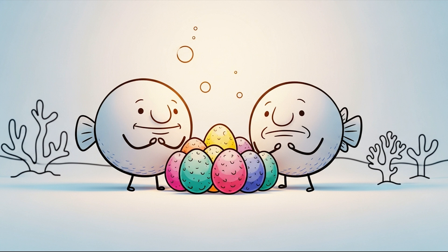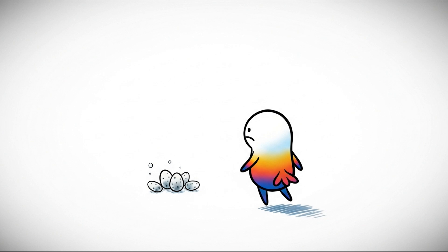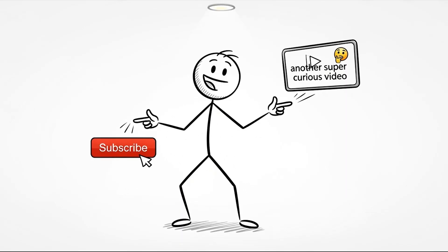Females are surprisingly attentive parents, laying up to 100,000 eggs at a time, and then sitting on them, much like a chicken incubating its clutch. Don't forget to support this kind of content by subscribing and watching this other super curious video you'll love.